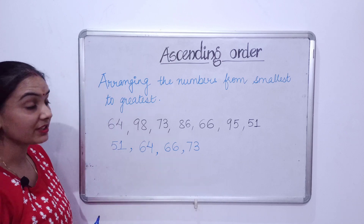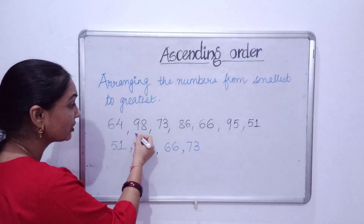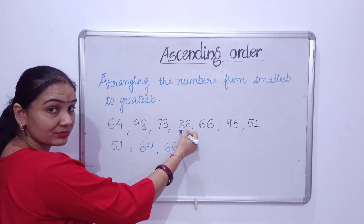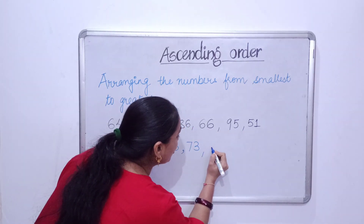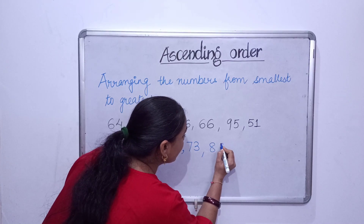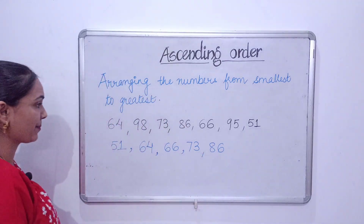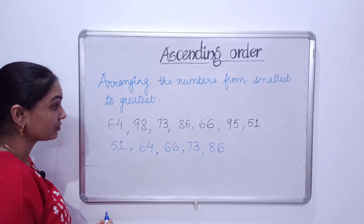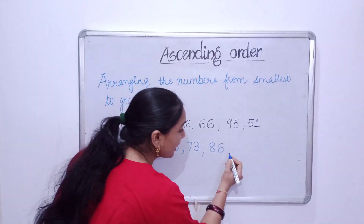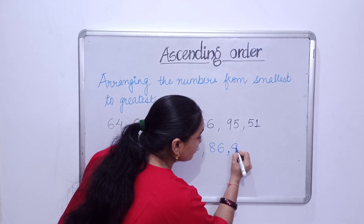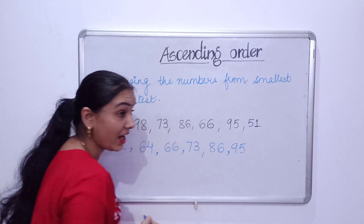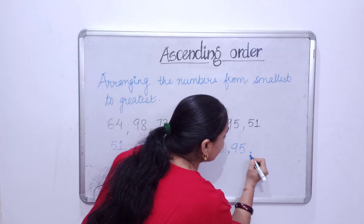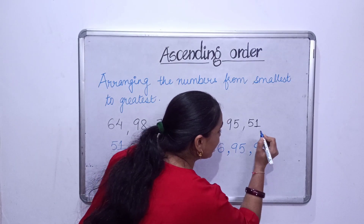Now after seventy-three, what will be the next number? Eighty-six. Yes! So we'll write eighty-six. After eighty-six, what will be the next number? It will be ninety-five. And the last one is ninety-eight.